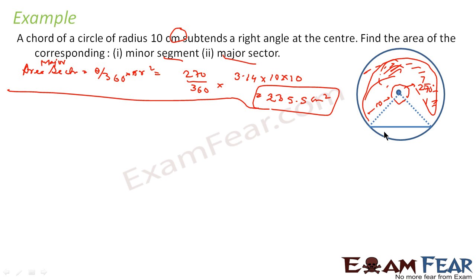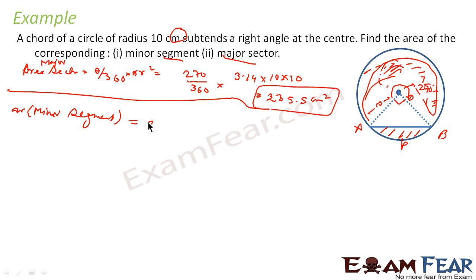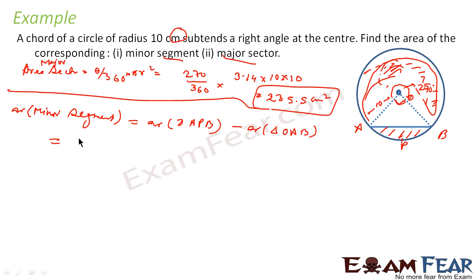Now the second part: find the area of the minor segment. Let me name the points — this is O, A, and B. Area of minor segment APB equals area of sector OAB minus area of triangle OAB. So the area of sector OAB: theta is 90 degrees, so it is 90 by 360 into pi...